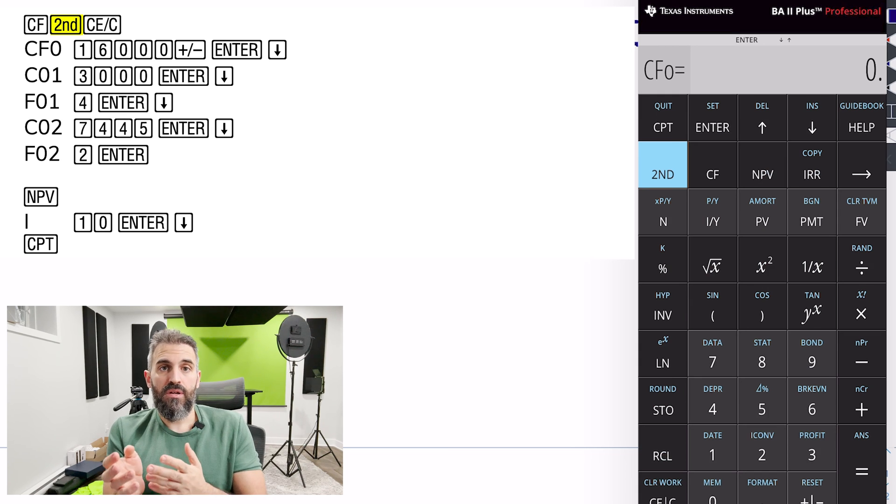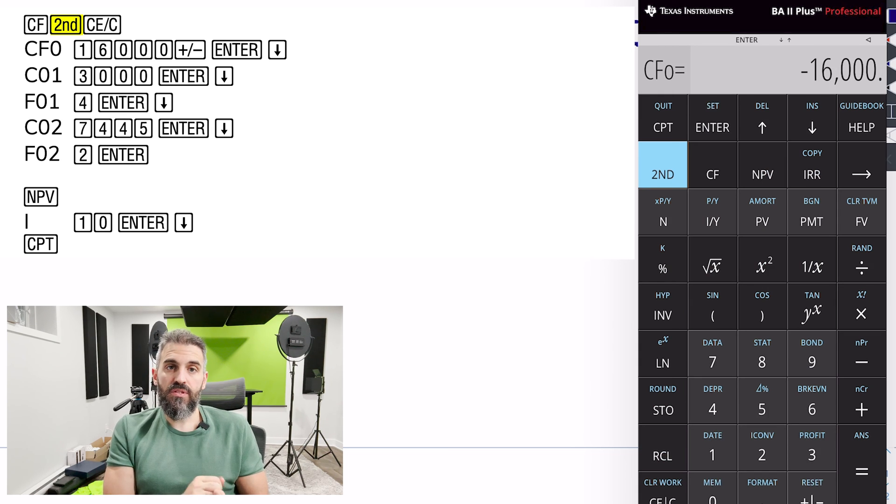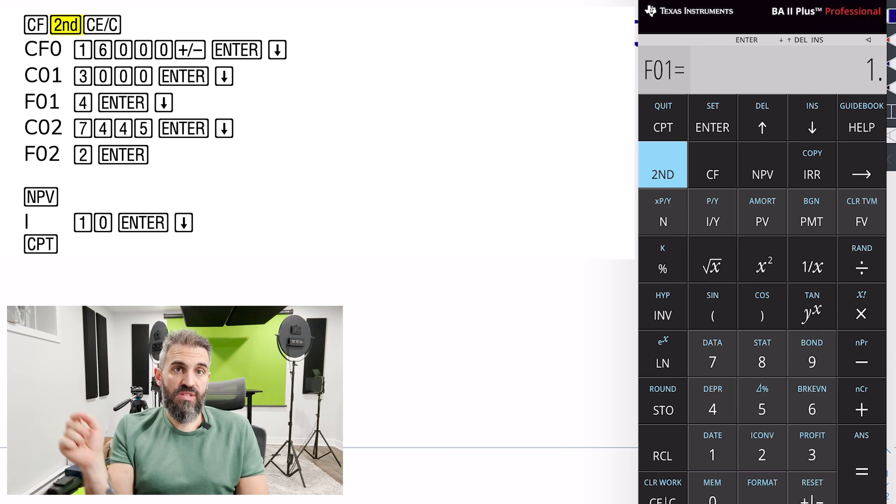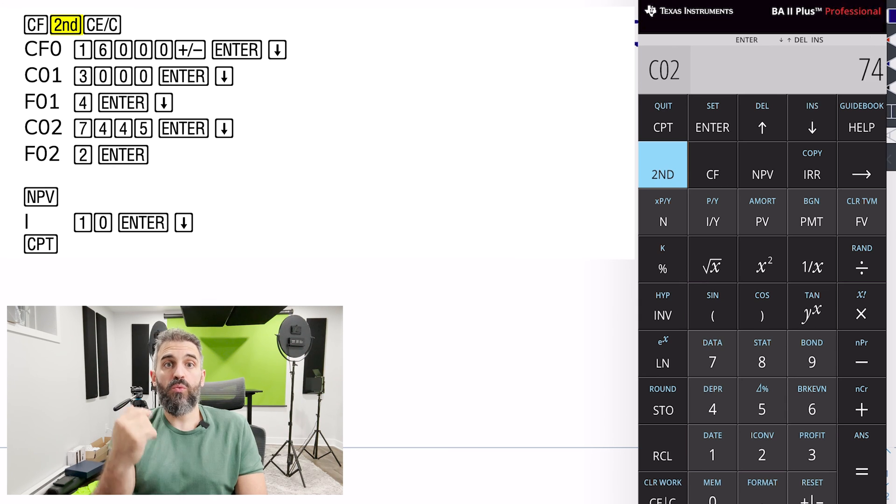So to do it on the financial calculator, since we know all of our cash flows, we're going to start by entering our cash flow at time zero as negative 16,000, then arrow down. Enter 3,000 as our next cash flow with a frequency of 4, so 3,000 enter down, 4 enter down. Those are the keystrokes, then we go down again.